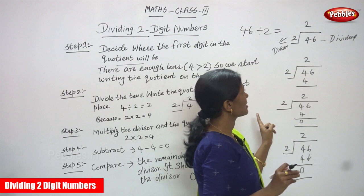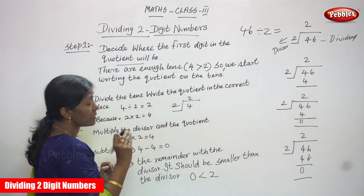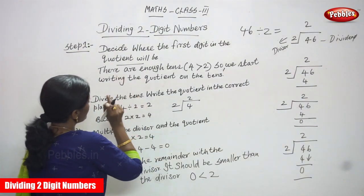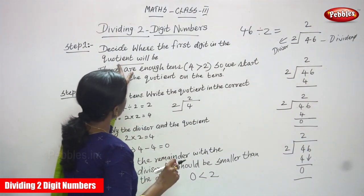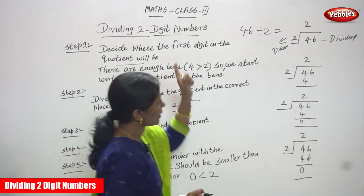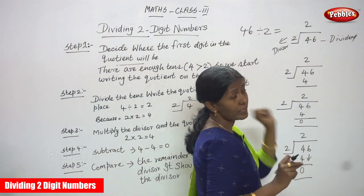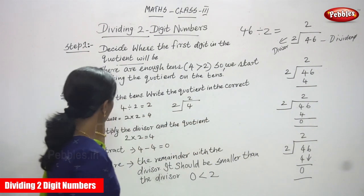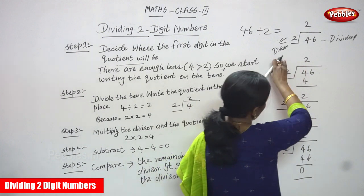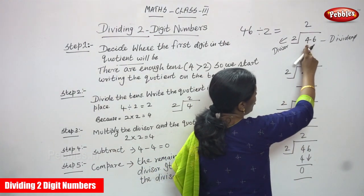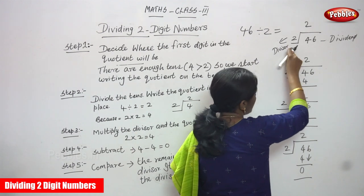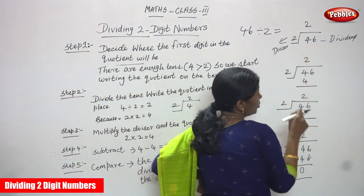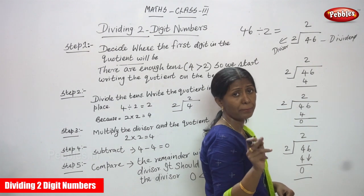So 46 is the dividend and 2 is the divisor. 46 is going to be divided by 2. First, you have to compare the dividend and divisor. So 4 is the tens digit and 6 is the ones digit, and 2 is the divisor. I have told you already — you should not consider the place value. You have to compare only the numbers.